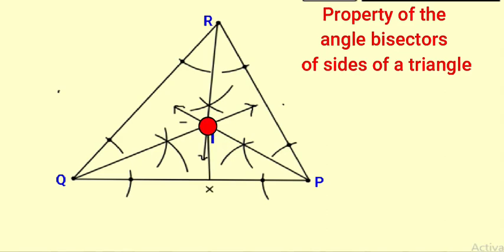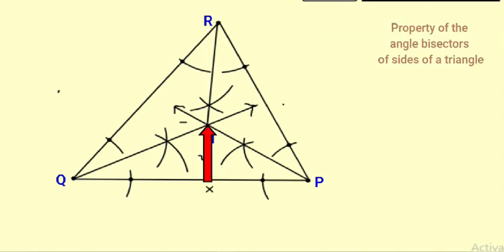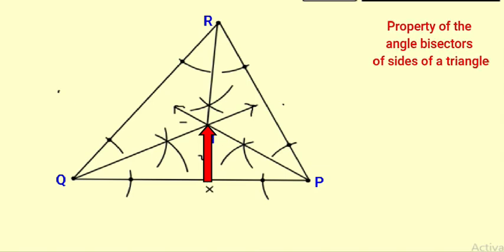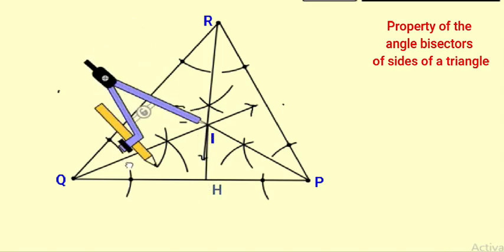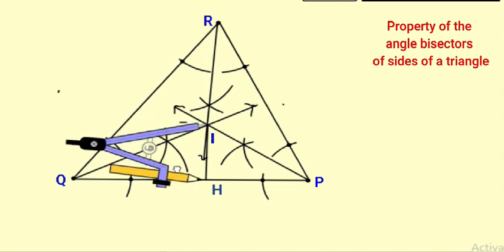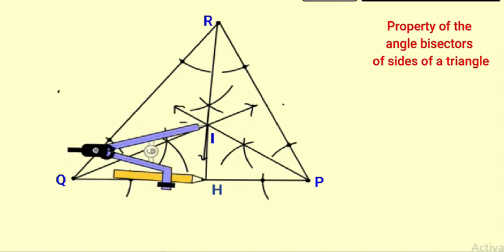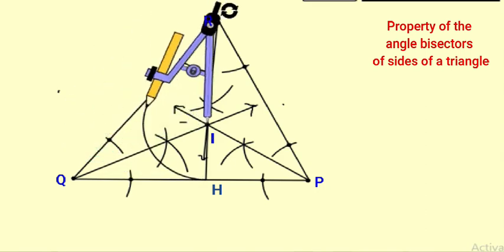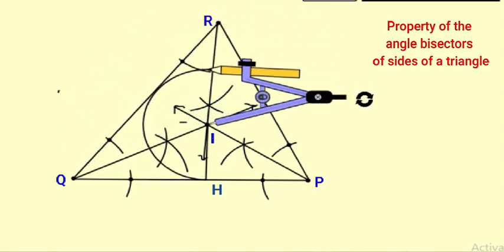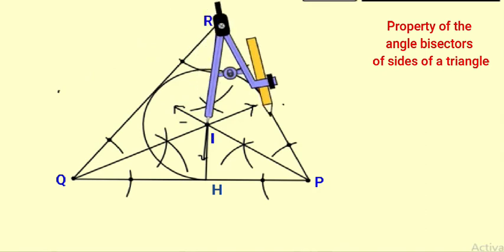Now through point I, draw a perpendicular to any one side of triangle PQR. Taking IH as the radius and I as the center, draw a circle inside triangle PQR touching all the sides of the triangle. I is called the incenter.